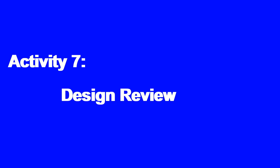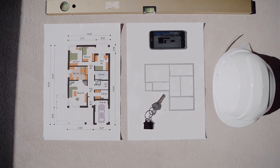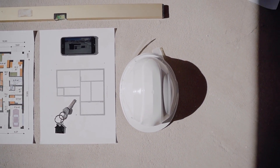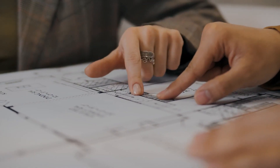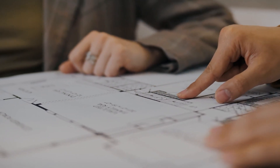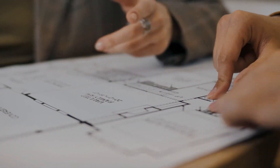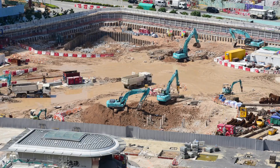Activity number seven: design review. Once you are equipped with the necessary drawings and specifications of your project, a senior draftsman or architect needs to review the design. As an experienced contractor, you will then present the important findings and your proposed solutions to the consultant's office for final decision.